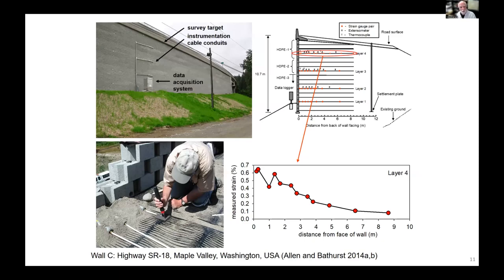Going back to the West Coast, here is another example of an MSE wall constructed with modular block units. You can see a uni-axial geogrid reinforcement. In the top right you can see a cross section with instrumentation. This was another wall in the database of instrumented field-scale walls that I've been able to collect with my partners over many years to develop new design models.